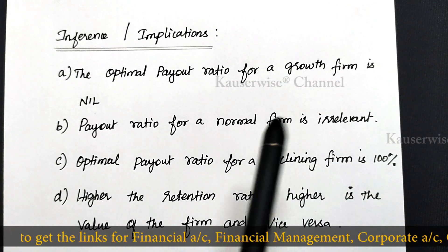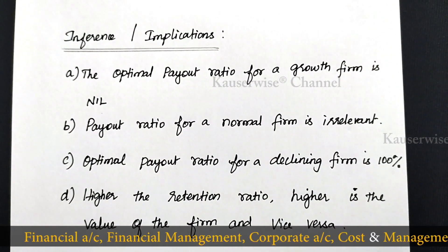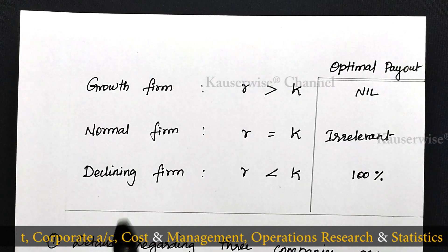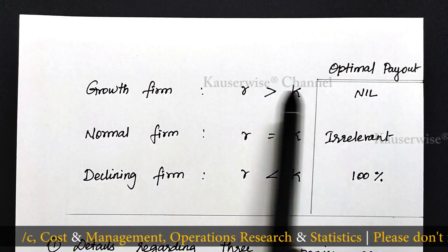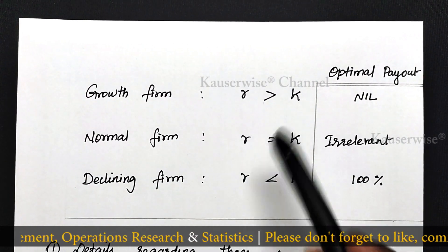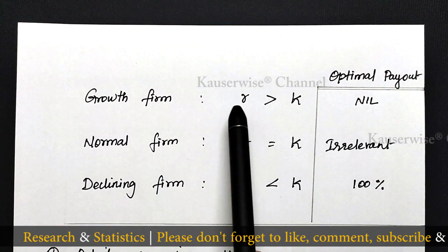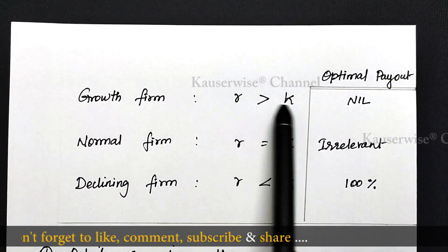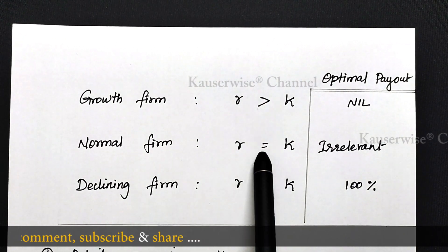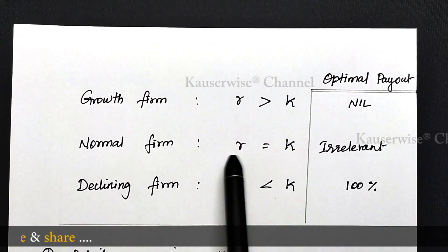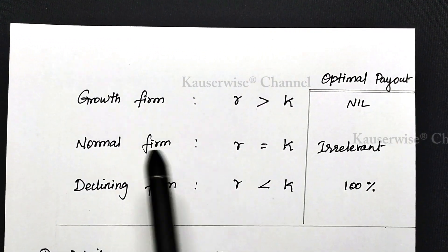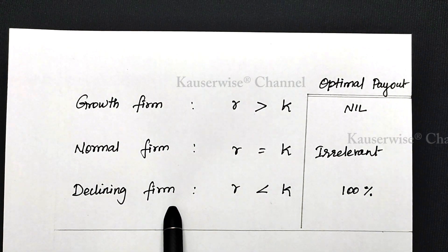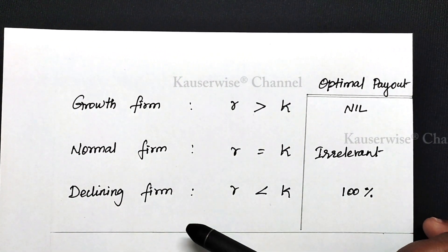Now let us see what is a growth firm, normal firm, and declining firm, and how to determine the optimum payout for these three different firms. In order to determine growth firm, normal firm, and declining firm, you should compare R and K — where R refers to rate of return and K refers to cost of capital. If R is greater than K, the firm is called a growth firm. If R is equal to K, the company is called a normal firm. If R is lesser than K, then the firm is called a declining firm.